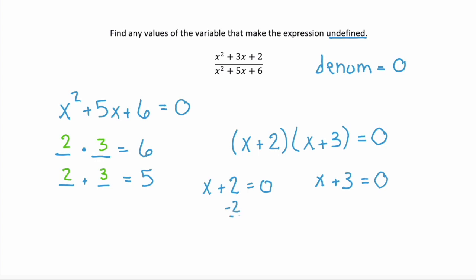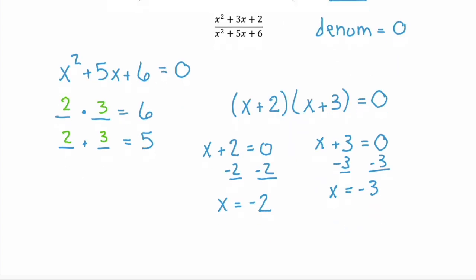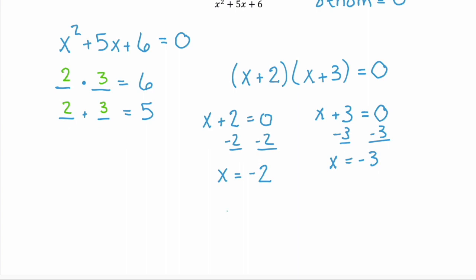Solving the first, subtract 2 from both sides, and we get x equals negative 2. And the second, subtract 3 from both sides, and we have x equals negative 3. So our solution is x equals negative 2 or negative 3. Whenever x is negative 2 or negative 3, the rational expression would be undefined.